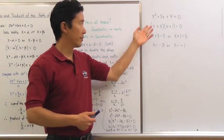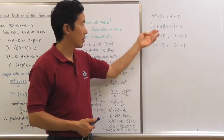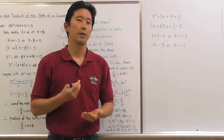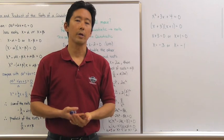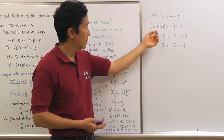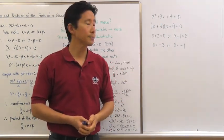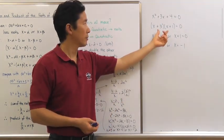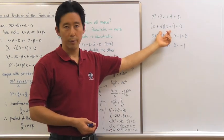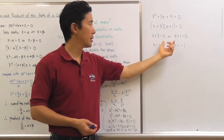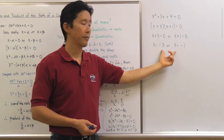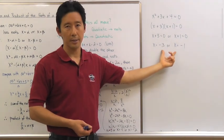Now this is what we've been doing. We have a quadratic equation, and how do you go about solving a quadratic equation? Well, in this particular case we can factor, and then by the zero product property, we set each one of those factors equal to zero, and we solve for the value of x.